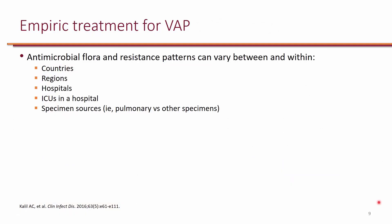Because VAP is caused by drug-resistant organisms, it is extremely important to be aware of drug-resistant variations. These variations in resistant patterns can occur at a country level, within regions — so different cities or different parts of a large city may have different patterns — as well as at the hospital level. Even within a single institution, different ICUs can have different resistant patterns.